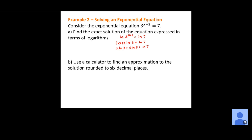Now it's just a matter of getting x by itself. Move the 2 natural log of 3 to the other side: x natural log of 3 equals natural log of 7 minus 2 times natural log of 3. To get x by itself, divide both sides by natural log of 3. We end up with x equals the natural log of 7 minus 2 natural log of 3, all over the natural log of 3. Since this problem wants an exact value, we leave everything in natural log form.